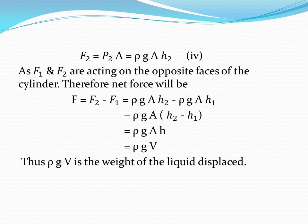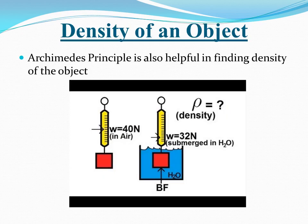We can also find the density of an object using Archimedes' principle if we know its weight in air as well as in liquid. Take an object of unknown density and find its weight in air using a spring balance. Then immerse it in liquid and note its weight again — it will decrease due to the upthrust. For example, if the weight in air is 40 N, it decreases to 32 N when immersed in water.